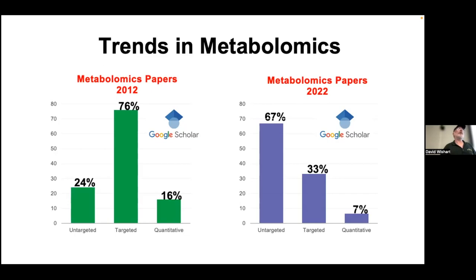This is a very disturbing trend. Because the only way you can move metabolomics into industry, into farming, the only way you can reproduce it, is to have something that's quantitative—that's the essence of science. At some level, I worry that metabolomics is heading towards extinction, because if we're only doing untargeted stuff, then it's a free-for-all and nothing will be reproducible or used in the world of industry.